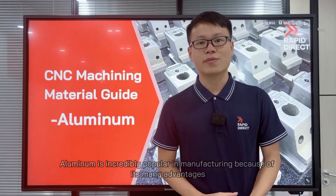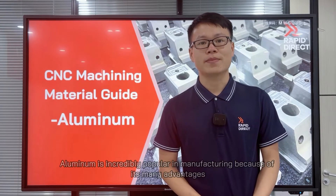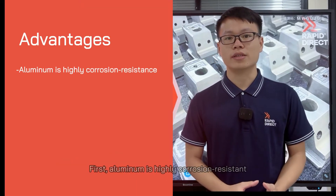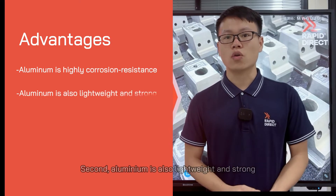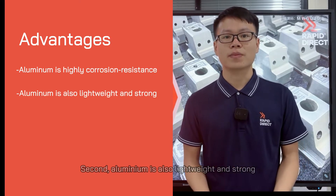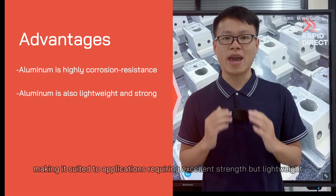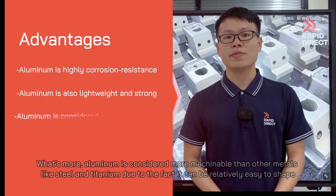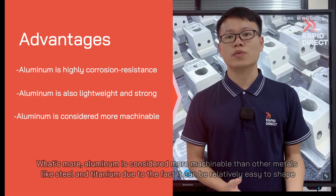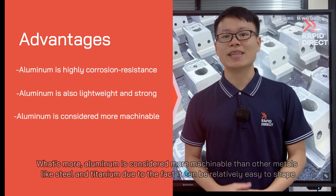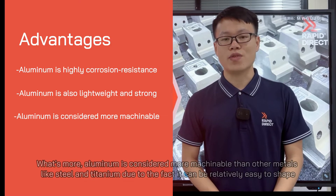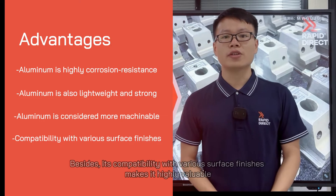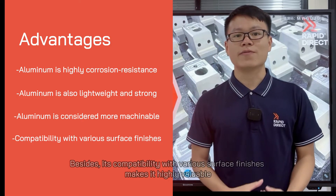Aluminum is incredibly popular in manufacturing because of its many advantages. First, aluminum is highly corrosion resistant. Second, aluminum is also lightweight and strong, making it suited to applications requiring excellent strength but lightweight. What's more, aluminum is considered more machinable than other metals like steel and titanium due to the fact it can be relatively easy to shape. Besides, its compatibility with various surface finishes makes it highly valuable.